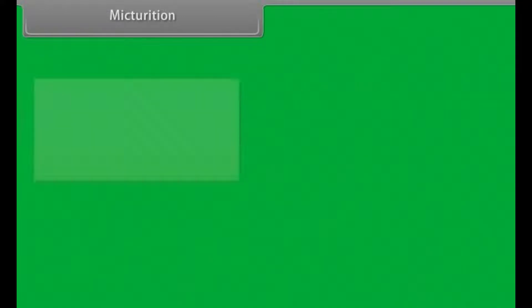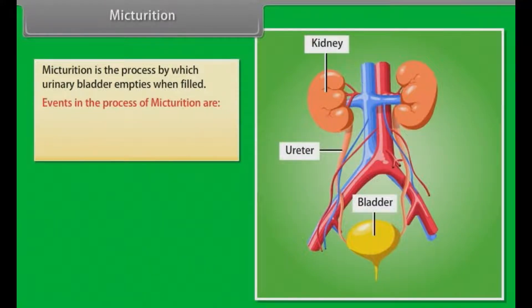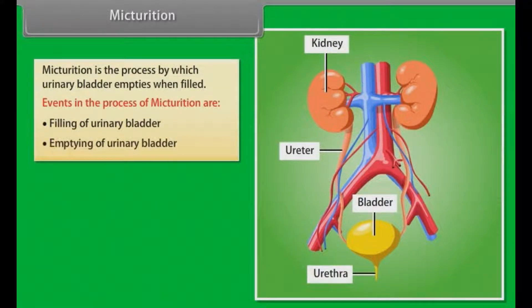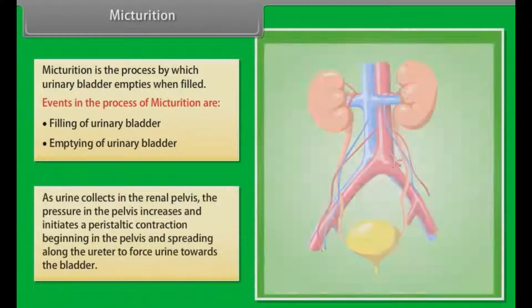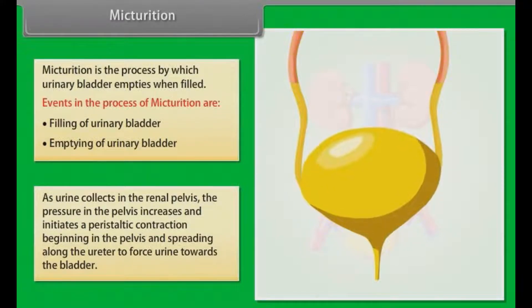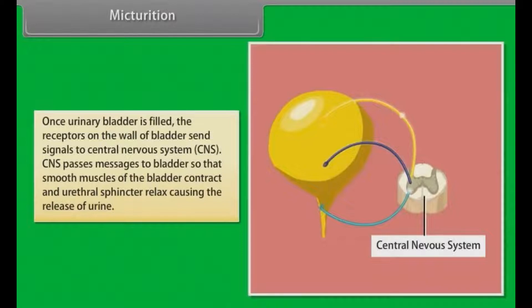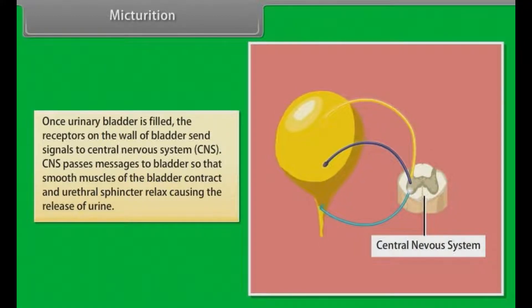Micturition. Micturition is the process by which the urinary bladder empties when filled. Events in the process include filling and emptying of the urinary bladder. As urine collects in the renal pelvis, the pressure increases and initiates a peristaltic contraction beginning in the pelvis and spreading along the ureter to force urine towards the bladder. Once the bladder is filled, receptors on its wall send signals to the central nervous system, which passes messages to the bladder so that smooth muscles contract and the urethral sphincter relaxes, causing the release of urine.